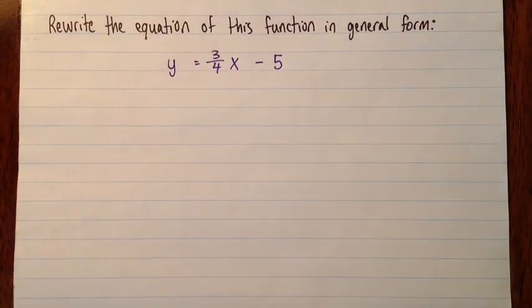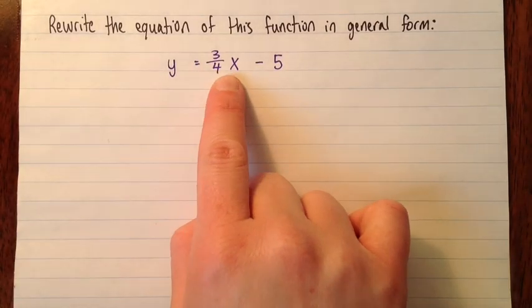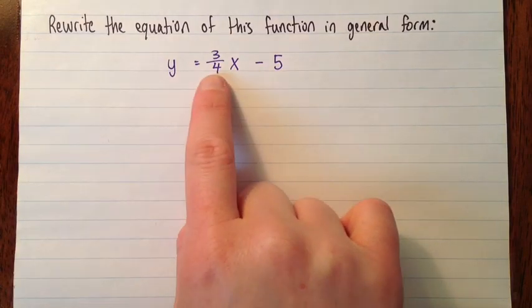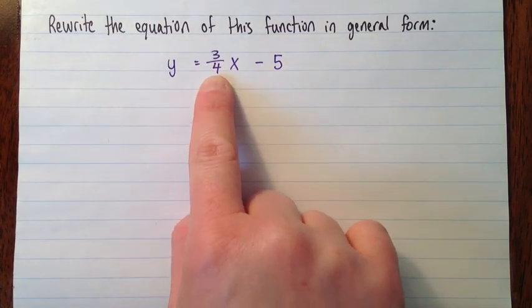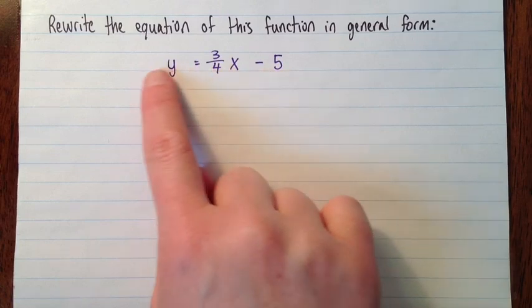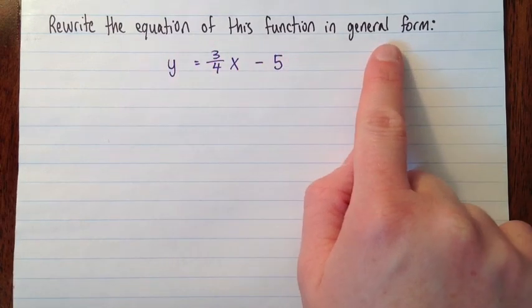So here's the equation of a function in slope-intercept form: y equals 3 over 4x minus 5. So the slope is 3 quarters, and the y-intercept is negative 5. We're being asked to rewrite the equation in general form.